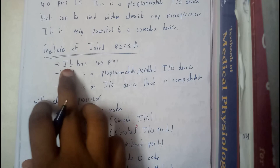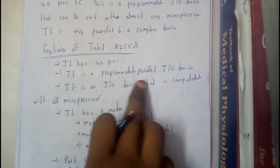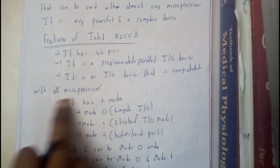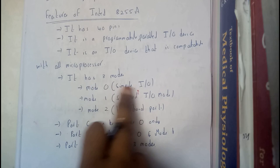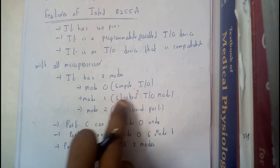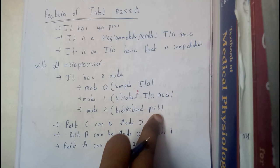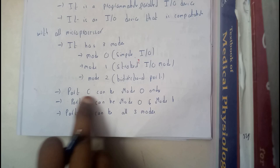So now let us go through some features of 8255A. It has 40 pins that we have discussed previously. It is a programmable parallel IO device. It is an IO device that is compatible with all microprocessors. This is good news to hear. It has 3 modes: mode 0, mode 1 and mode 2. Mode 0 is simple IO, mode 1 is strobed IO mode, mode 2 is bidirectional port. So I hope everyone got a small idea on all the 3 modes.